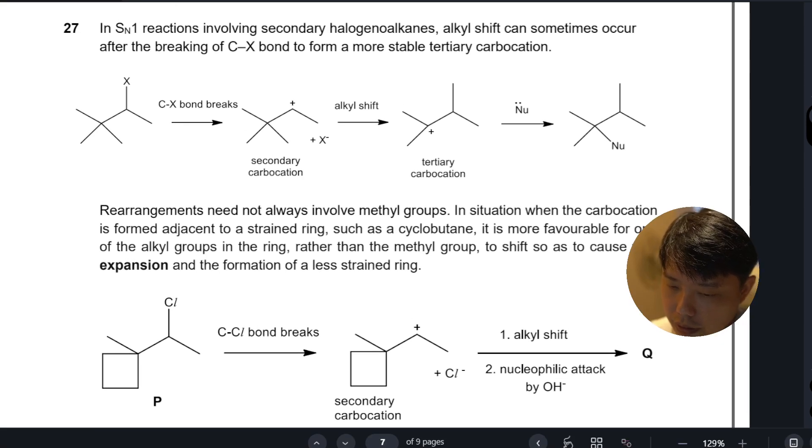Question 27 involves an SN1 mechanism where alkyl shift can happen after you form the carbocation. What happens is the methyl group shifts over here, and the carbocation shifts to the original position of the methyl group.